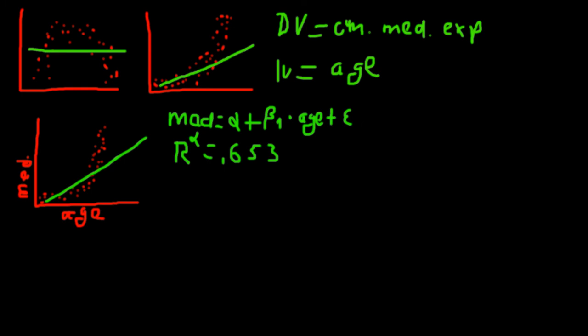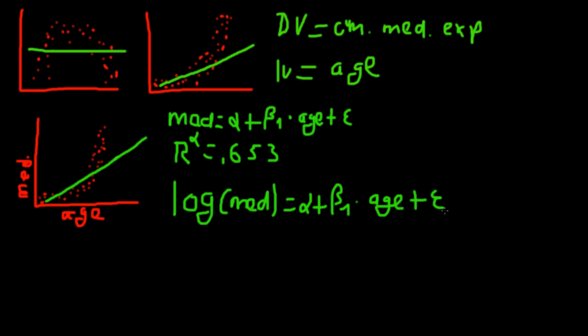So let's transform our data. Looking at the data, I can see that medical costs are exploding as age increases, so the variable medical cost is causing trouble. A good way to transform an exponential model is to take the logarithm. Our transformed model then looks like this: log(medical costs) = α + β₁·h + ε. Putting this into R with the same simulated data gives us back an R² of 0.984 — a much better model.